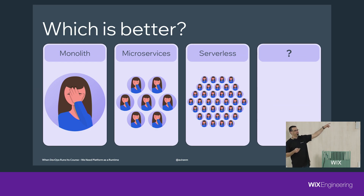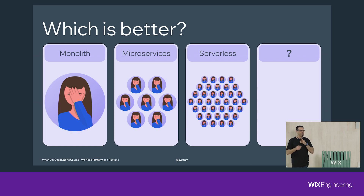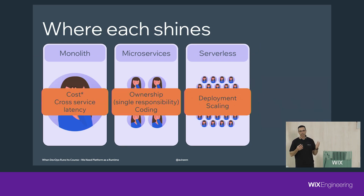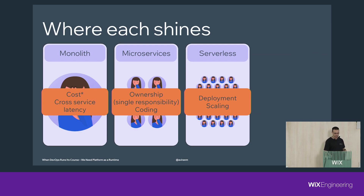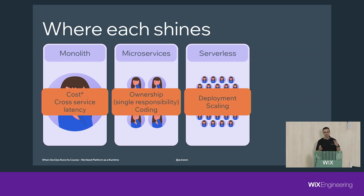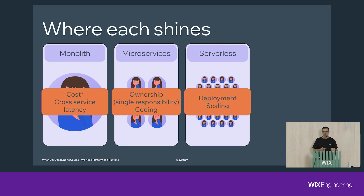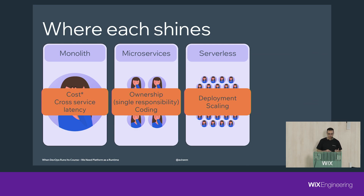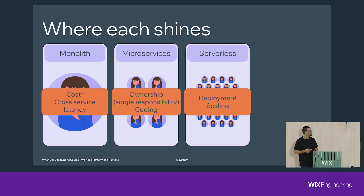So there is a question mark - what is the next thing? And this is going to be our talk. The reason we get different answers is because it depends. Every technology stack that you choose has its pros and cons. With Monolith, you get better resource utilization, great latency, and performance because everything runs in process - fast iterations. Microservices is good for ownership at org scale. And serverless shines in deployment and scaling.